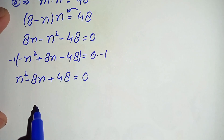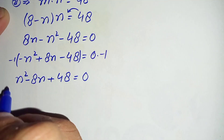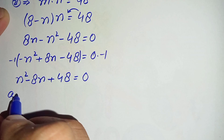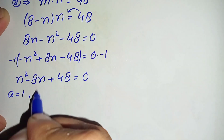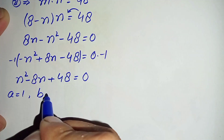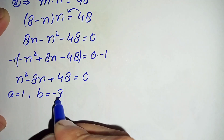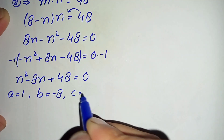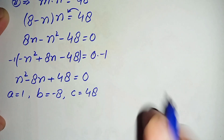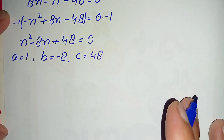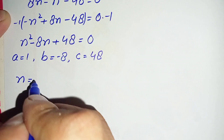For the quadratic formula we identify a, b, and c. The value of a, the coefficient of n squared, is 1. The value of b, the coefficient of n, is negative 8. The value of c, the constant term, is 48.